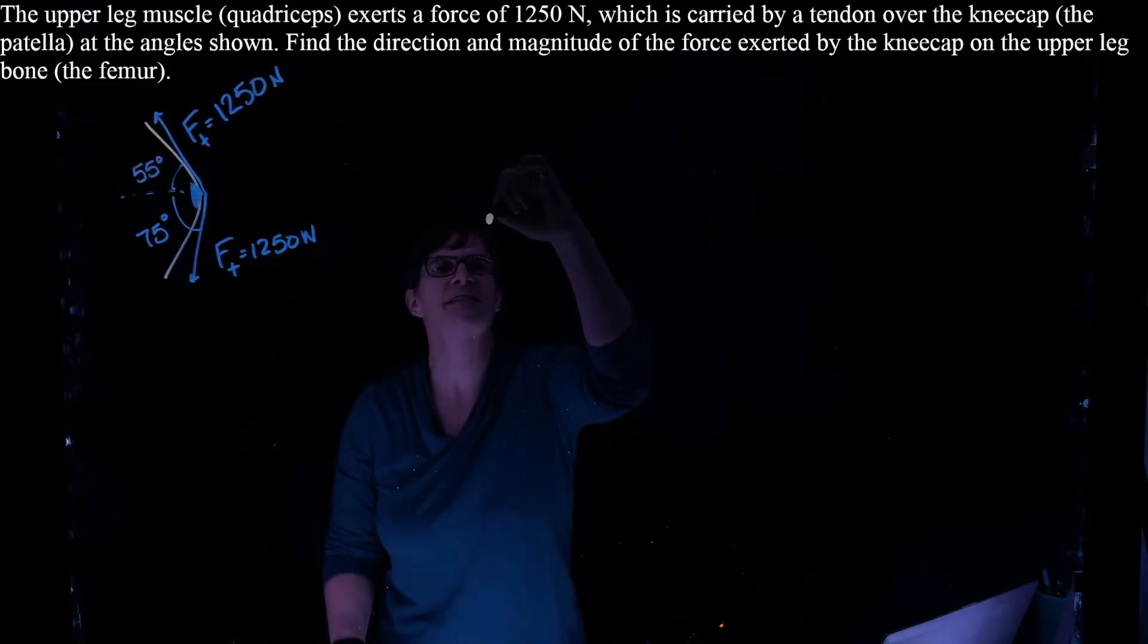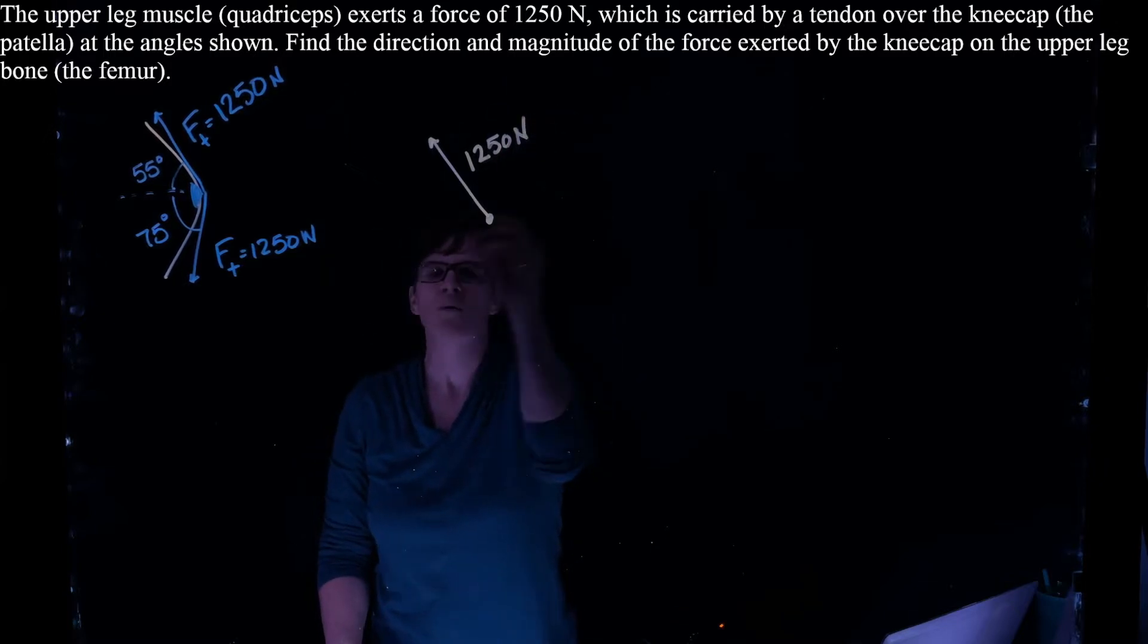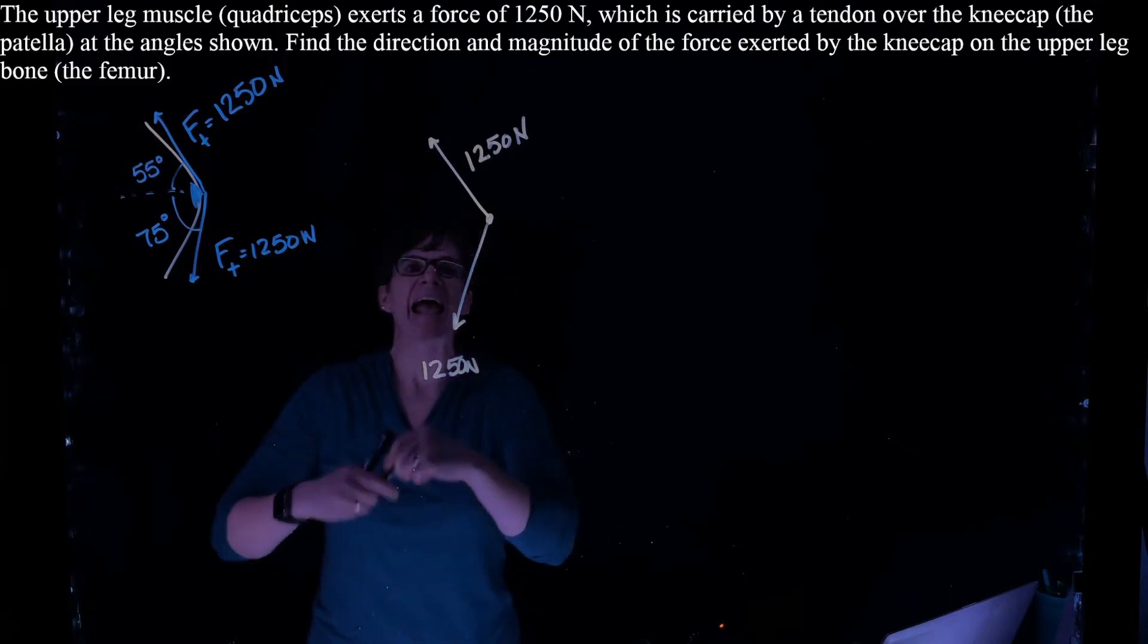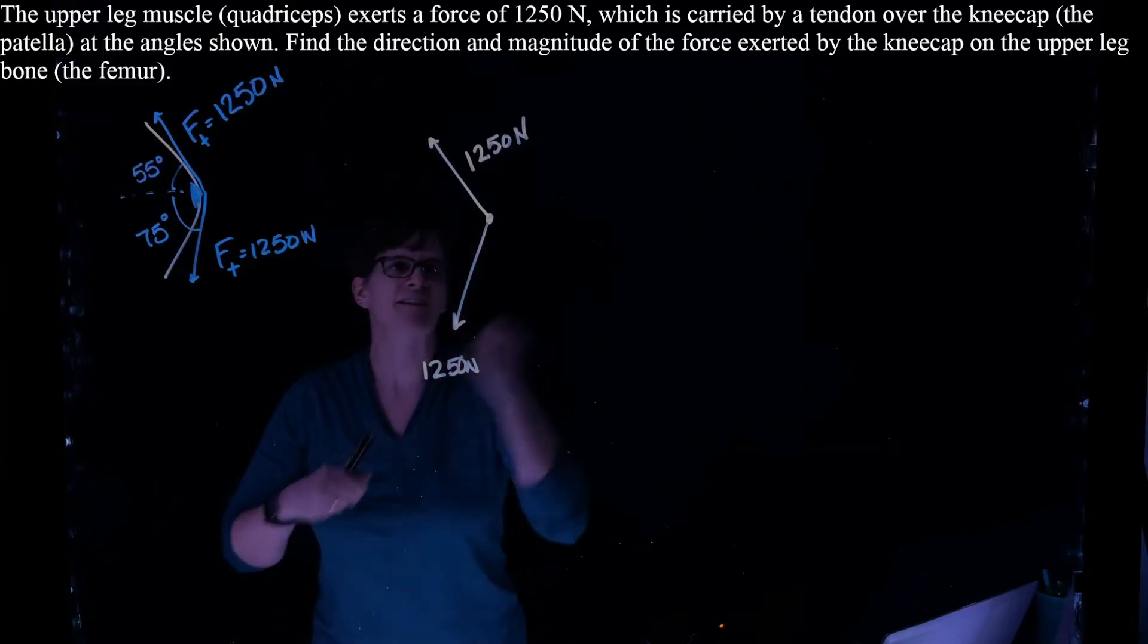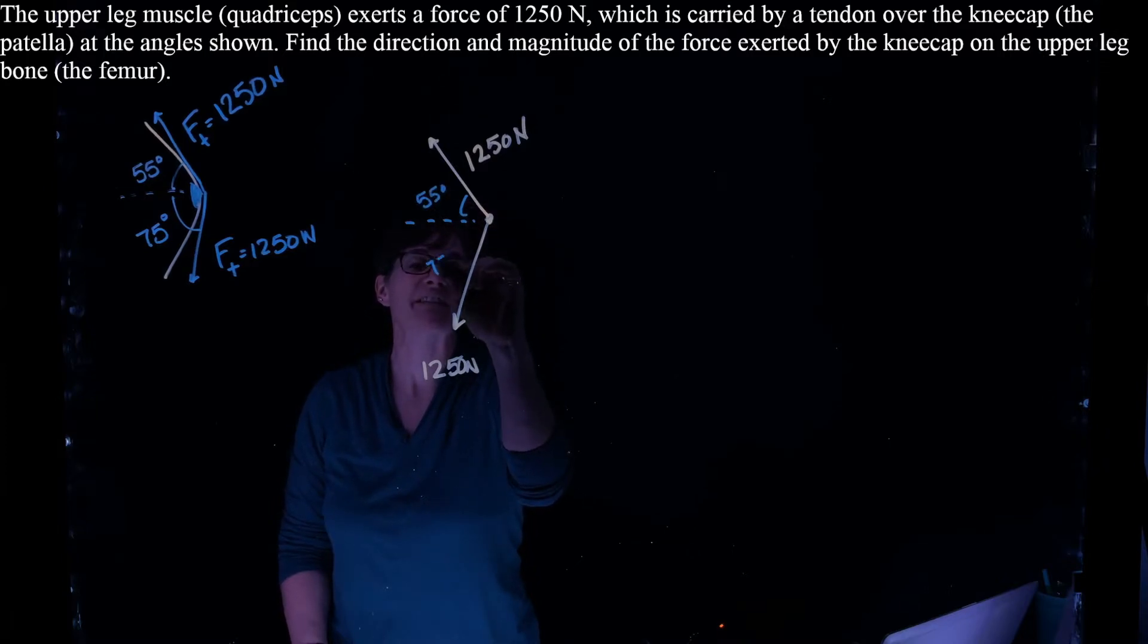We have the force of the tendon going up at 1,250 newtons. We have the force of that same magnitude sort of going down into the left at 1,250 newtons. And we know both of these angles. So this is 55 degrees and this is 75 degrees.